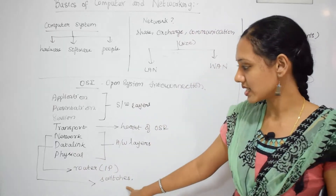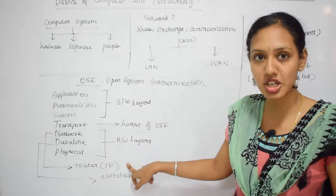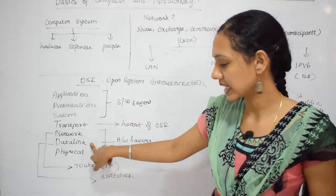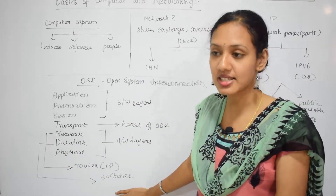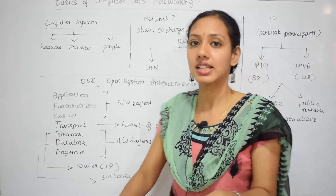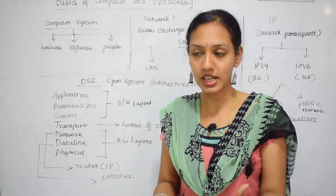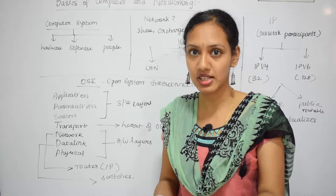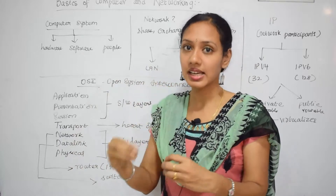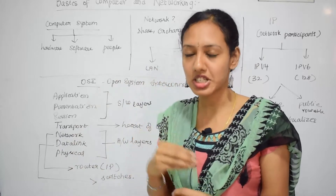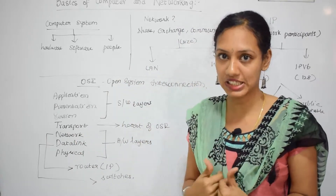A switch sits in the second hardware layer of the OSI model — that is the Data Link layer. A switch is not capable of having an internet connection. It is a physical device used to connect all the computers within a network, say within a LAN. It is used to manage reports, security, and other basic functions, and does not have any internet connection.